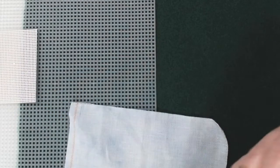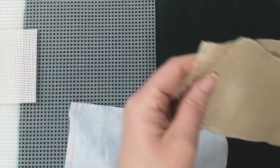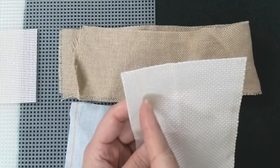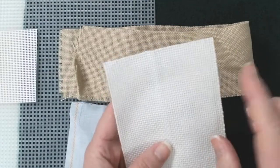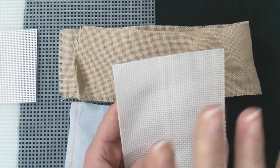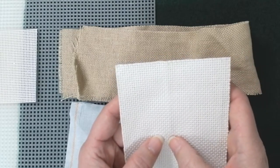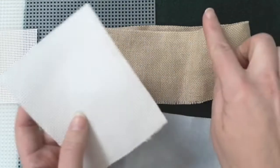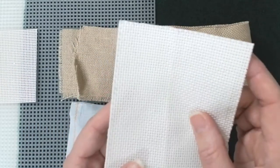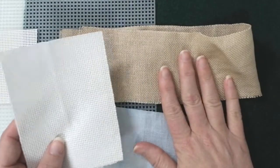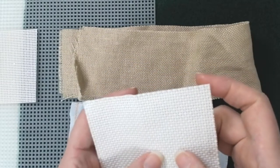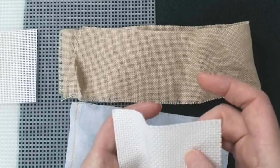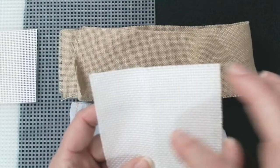Or even weave fabrics like linen or aida fabric. These even weave fabrics are called even weave because they have the same number of threads vertically and horizontally. So when you hear something like 14 count, that means you have 14 threads per inch. Aida is different from linen because aida has even smooth threads that are bound together and woven together to make up an even smooth thread woven in and out.